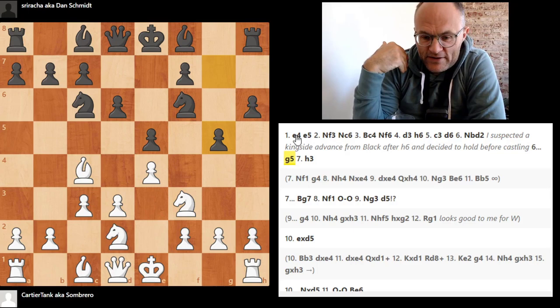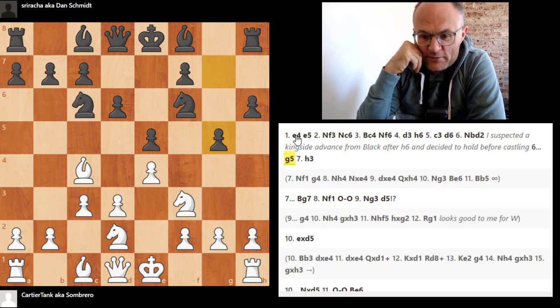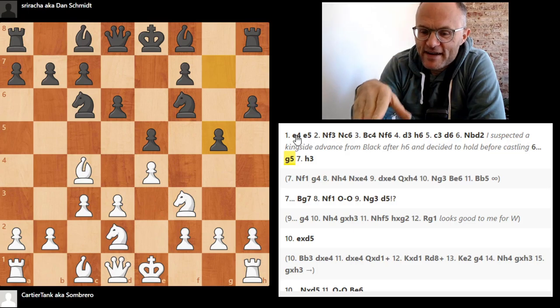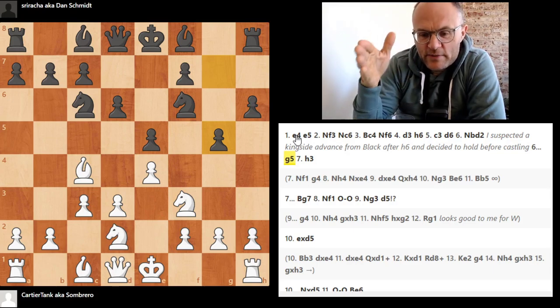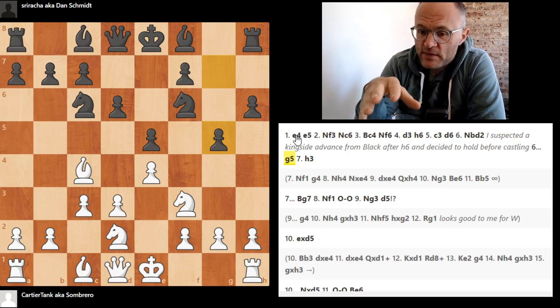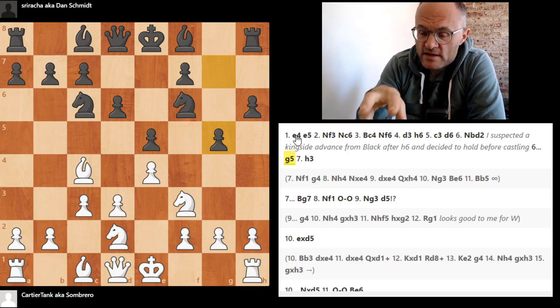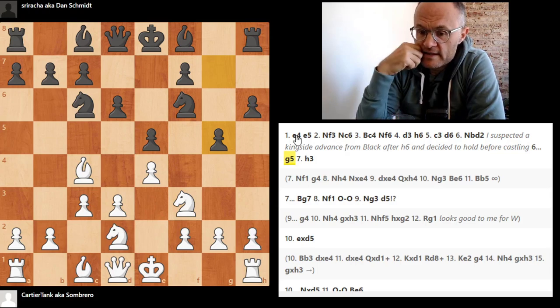But actually has an interesting idea with g5. People of my generation don't really generally approve of such methods, because back in the day, this was not allowed. But just like we have Harry the h-pawn now, we also now have Gary the g-pawn, and if you conceive of it as a spatial grab on the king side, then I think it's fundamentally playable.